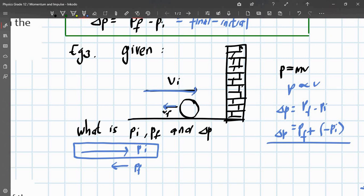So if this here is the initial momentum, what would minus pi be equal to? Minus pi would be equal to the opposite of that. So it would be the same magnitude, but in the opposite direction. That's what it means.